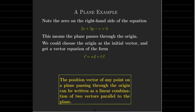Here is a very important fact that will come up throughout the course: if a plane passes through the origin, then the position vector of any point on that plane can be written as a linear combination of two vectors parallel to the plane. We saw this in R2 and the xy-plane. If you take the xy-plane and rotate it, you get another plane through the origin, so whatever holds in the xy-plane holds for any plane through the origin.